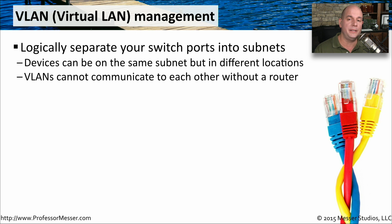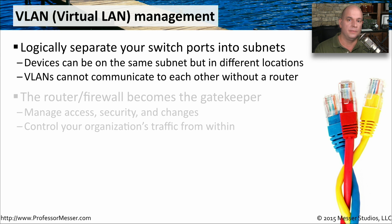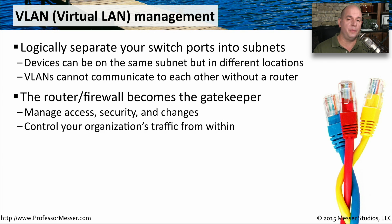So the same limitations are in place. If you need to communicate between one VLAN or another, you're going to need a router to perform that function. This Layer 3 device then is going to be the gatekeeper. Many people will put a router or even a firewall between all of the different VLANs and then be able to have very granular control over what traffic is passing between the individual VLANs.